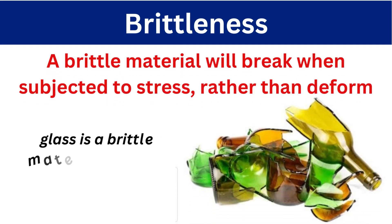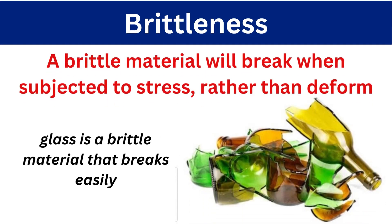Next is brittleness. Brittleness is the opposite of ductility. A ductile material when subjected to tensile load will deform but will not break. But a brittle material will break when subjected to stress — it will not deform, it will suddenly break. For example, glass is a brittle material that breaks easily.